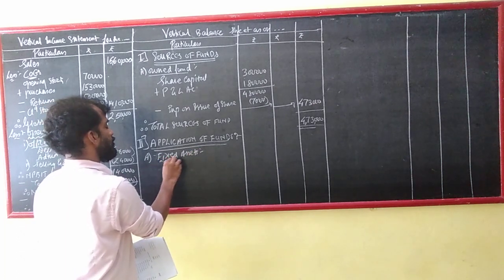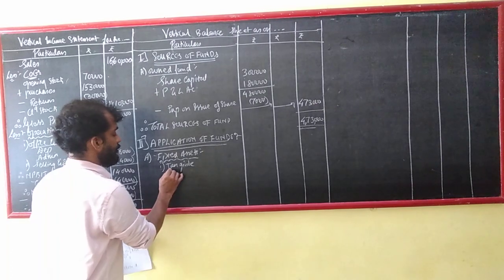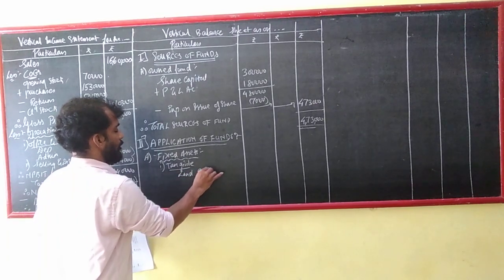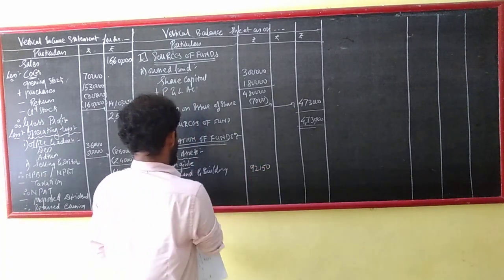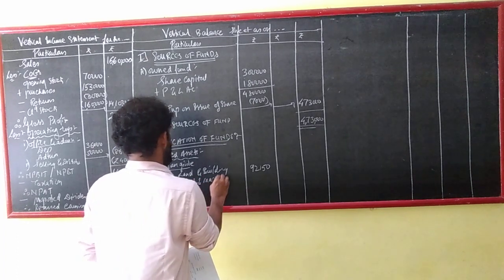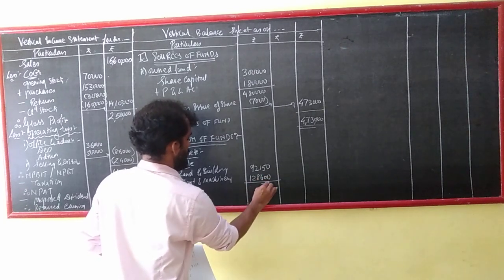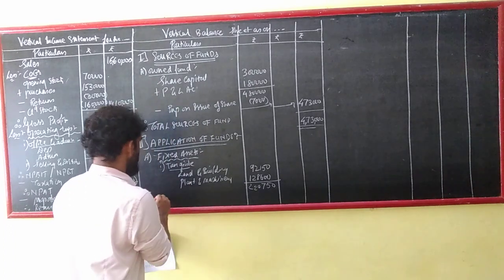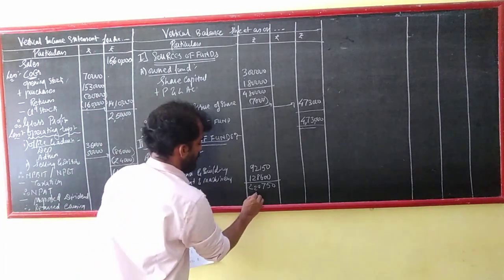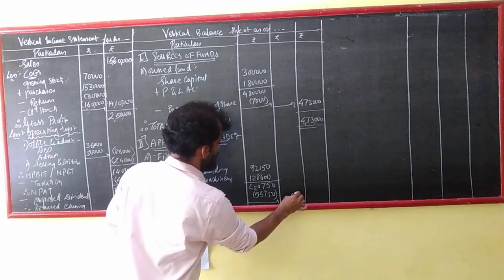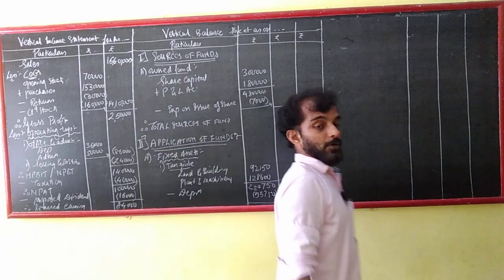Fixed assets is the most important part. You will have 2 assets: 95,000 and 8 lakh. In tangible assets: 2,600, 20,000, 750. Less depreciation: 55,750. So we are in tangible assets. Speaking about intangible assets - do I have an intangible asset? Yes, goodwill.